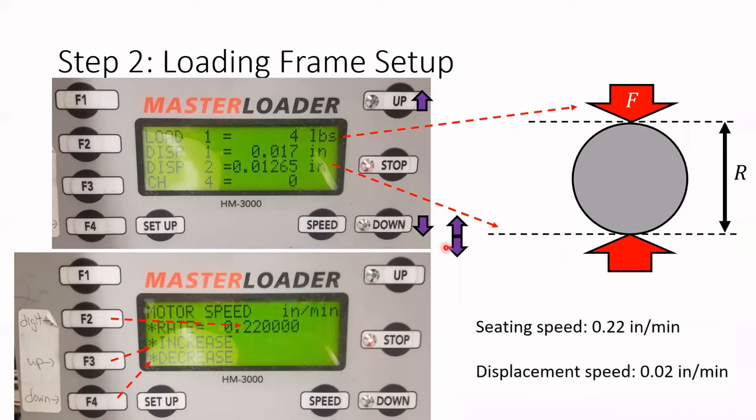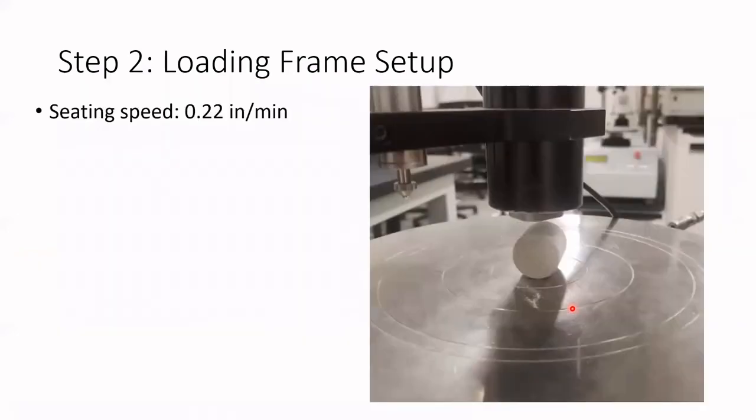In this work we are going to use two speeds: seating speed and displacement speed. Using seating speed, we can seat our sample. We are going to move up our lower frame until it touches the upper part of the frame. When that happens, we will see that the force slightly increases.